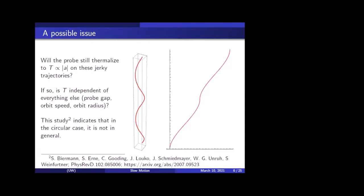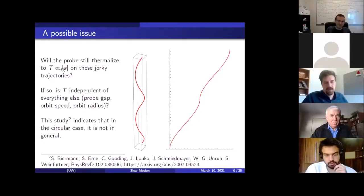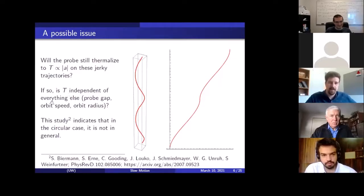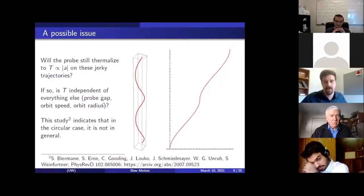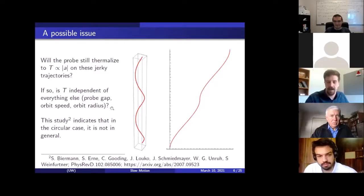Okay, so a good question that might follow from this, and I think this was asked after the last talk, is will the probe still thermalize to a temperature proportional to the acceleration on these jerky trajectories? Right? It's not obvious that it will. And if so, is the temperature independent of everything else, independent of the probe gap, and the orbit speed, and the orbit radius? And so this study here that I'm citing down here looked at the circular trajectory case in particular in 2 plus 1 and 3 plus 1d, and found out how the probe's final temperature depends on these other parameters that I'm mentioning here. And the study indicates that while you do get some proportionality to the acceleration, in general, it's not independent of everything else, which I think that's a problem.